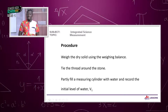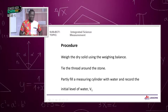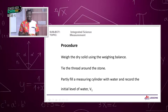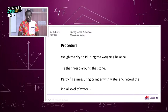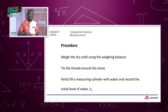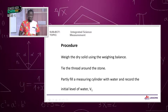For the procedure, remember the object's mass can be determined but its volume cannot be calculated directly — we find it indirectly. First, weigh the dry solid using the weighing balance. Clean it well, then gently place it on the weighing scale and measure. After determining the mass, note it down.